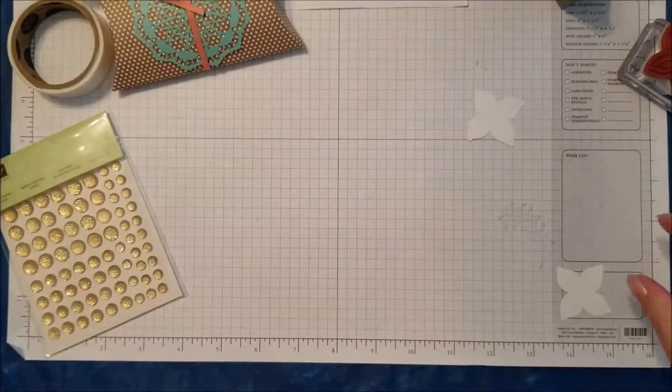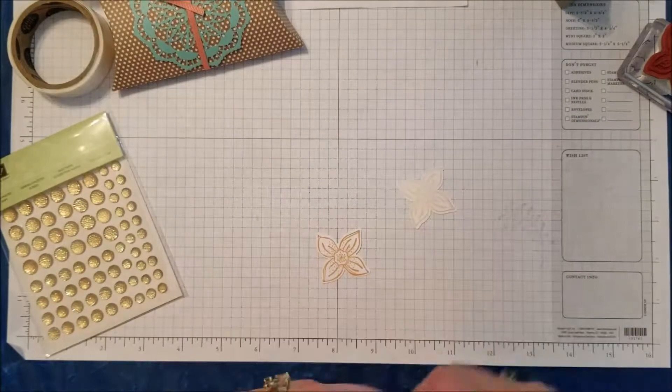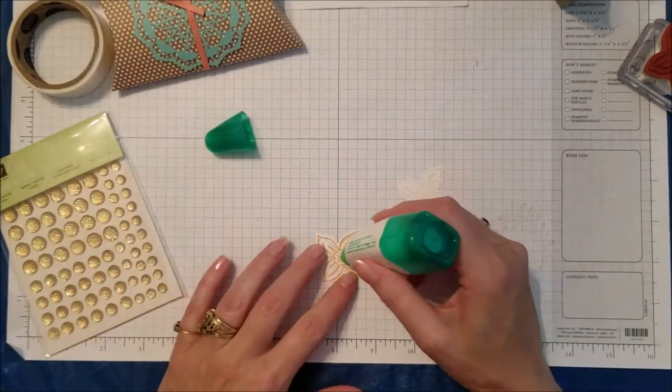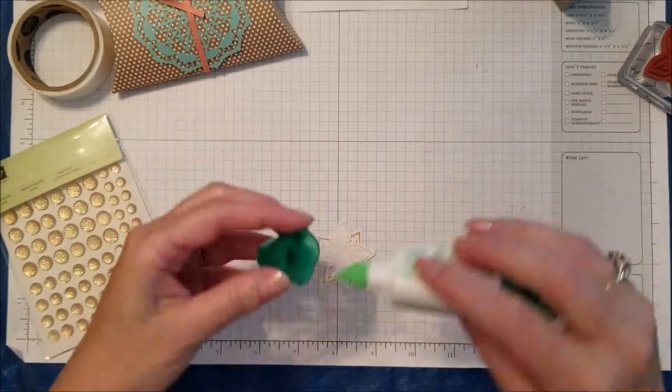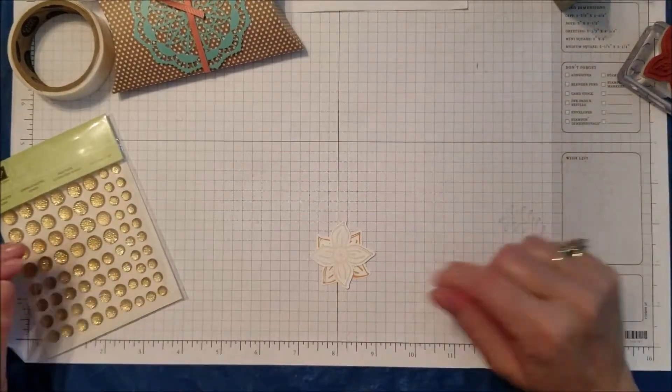Again, I'm going to use a little bit of the Tombow glue. I want my dark flower on the bottom and I'm just going to lay that right there.